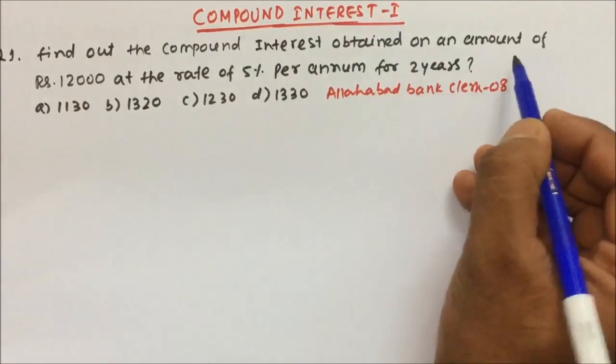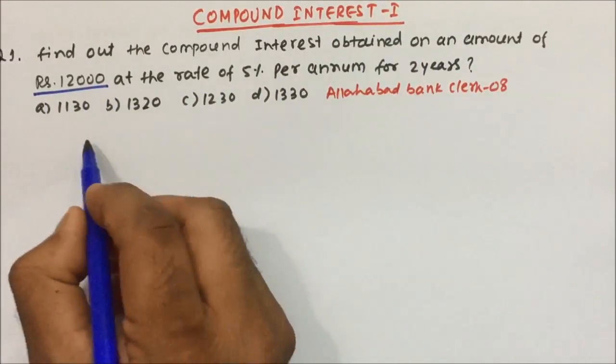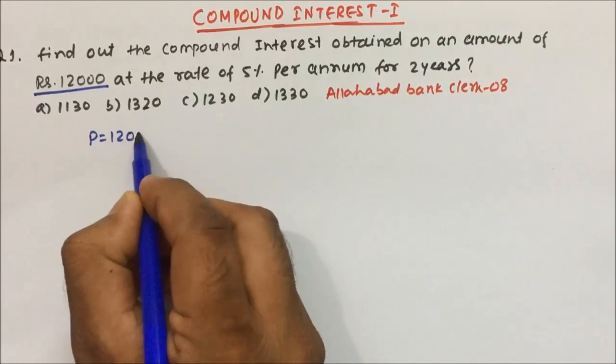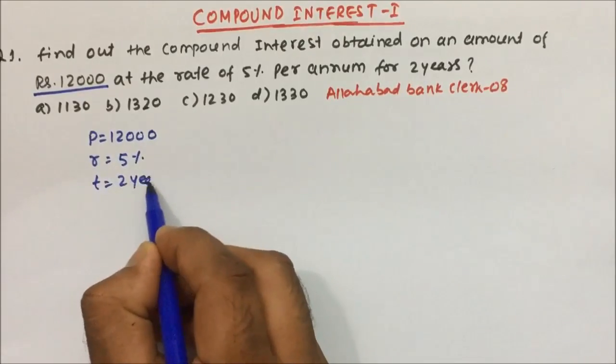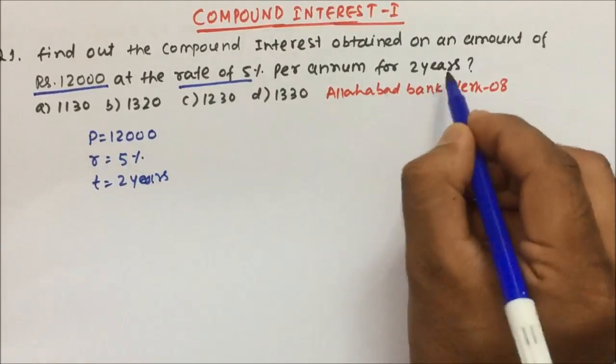Find out the compound interest obtained on an amount of rupees 12,000. So principal is given, how much? 12,000. And rate is 5% and time is two years. This is given in the question - rate is 5% and time is two years.